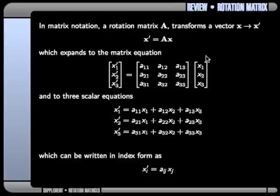And of course that expands to this matrix equation and to these three scalar equations, one scalar equation for each of the components of x prime. And naturally we can write these in index form as just this abbreviated equation down the bottom.